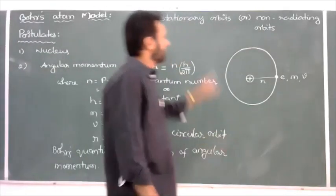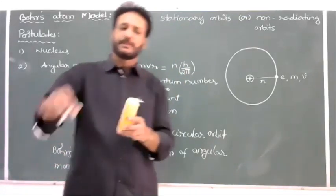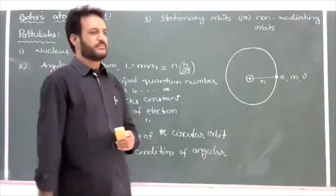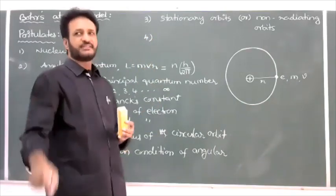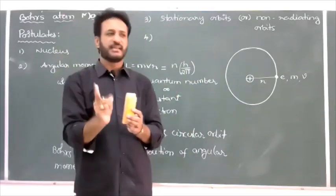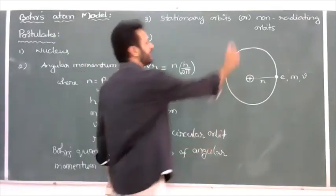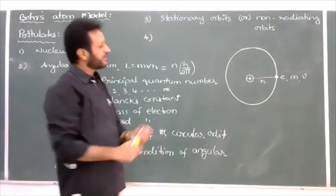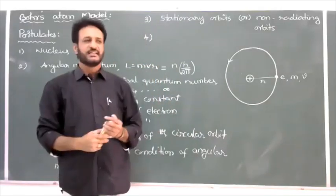Fourth postulate. Whenever electron is revolving in a particular orbit, no energy is released — that is clear. But when is energy released by electron? That is also explained by Bohr. When we supply some amount of energy from outside, the electron will absorb it and jump from the lower to higher orbit. When the electron jumps from a higher stationary orbit to a lower stationary orbit, then only energy is released by the electron.